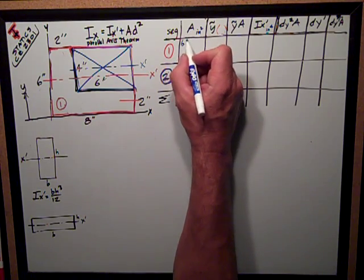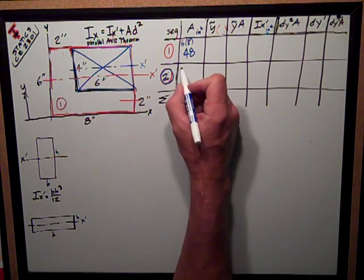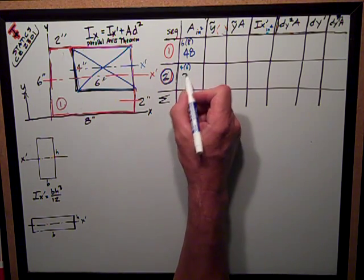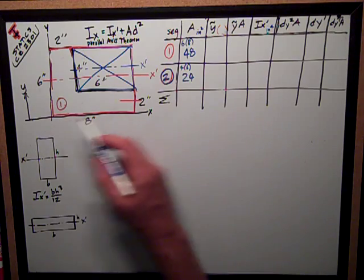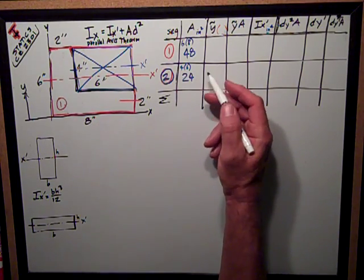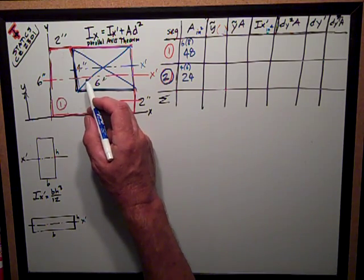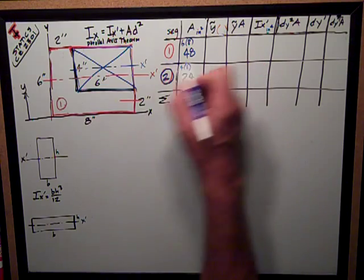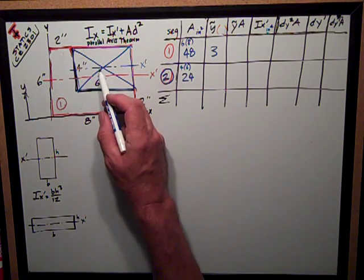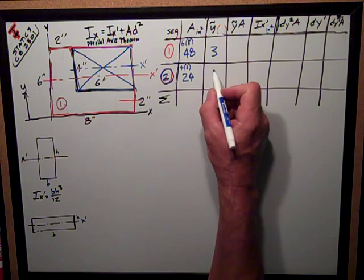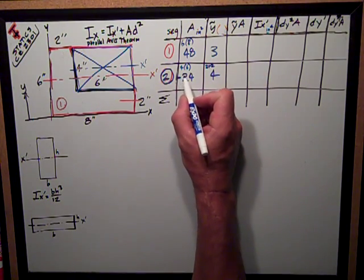The big rectangle, 6 by 8, is 48 inches squared. The smaller rectangle is 4 by 6, it's 24 inches squared. Now y tilde is the distance from a reference point. This is just solving for the centroid, just like we've been doing all along. Y tilde is the distance from the reference axis x up to the centroid of the shape. For the big rectangle, it's half of its height, 3 inches. For the little rectangle, the cutout, it's 2 plus 2 inches to its centroid, or 4. I forgot this is a negative area, negative 24. Very important.